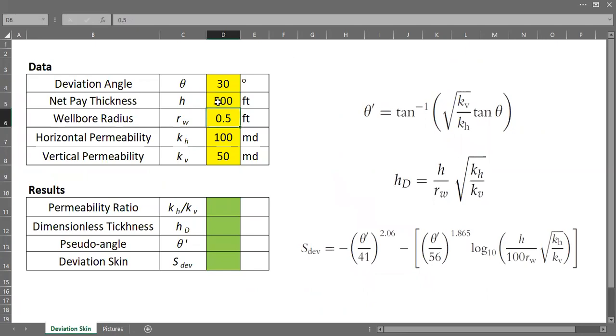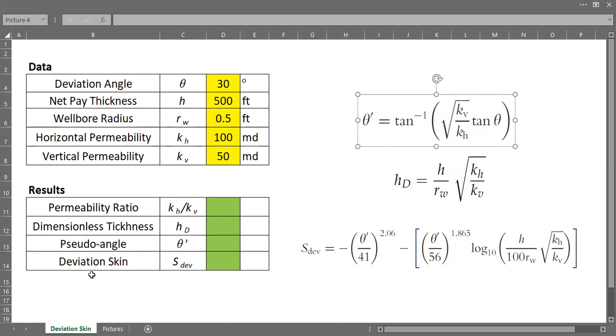And the wellbore radius Rw is 0.5 feet, with horizontal permeability KH of 100 millidarcies, with vertical permeability KV of 50 millidarcies. Now we need to calculate the deviation skin, and we can do that by using these formulas. I will show you how to use these formulas to finally arrive at the deviation skin.